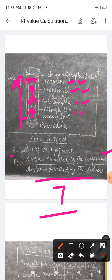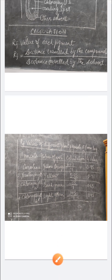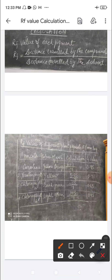To calculate the RF value we will first make a table. Here you can see the table: RF value of different plant pigments at room temperature. The first column is the name of the pigment, the second column is the color of the spot, the third column is the calculation, and the fourth column is the RF value.